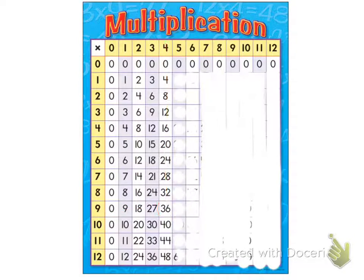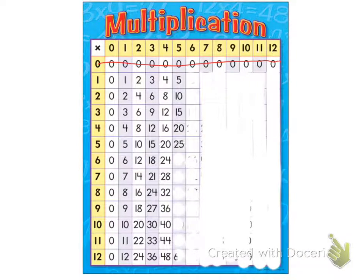Whenever we're asking for the multiple, we don't count the zeros row because it's just zero. Let's do the multiples of five: five, ten, fifteen, twenty, twenty-five, thirty, thirty-five, forty, forty-five, fifty, fifty-five, sixty.